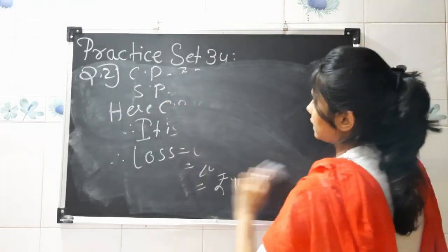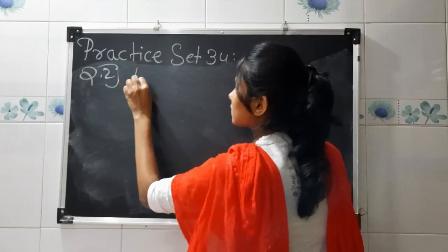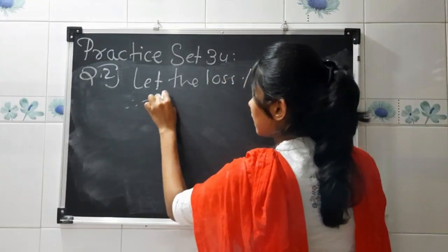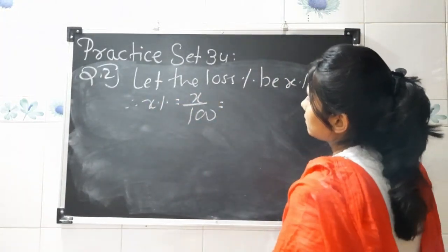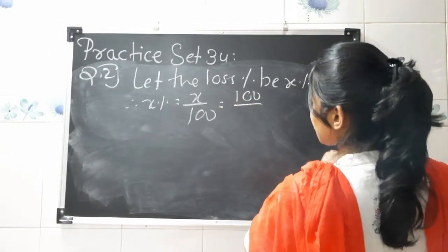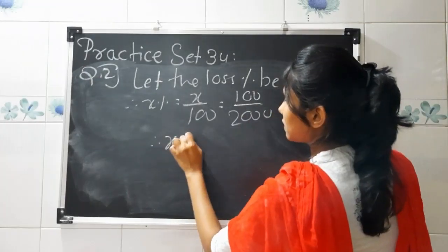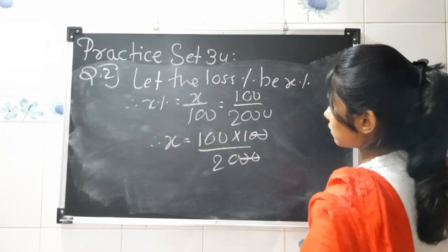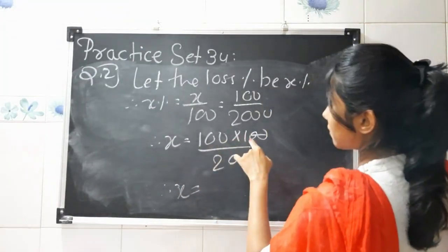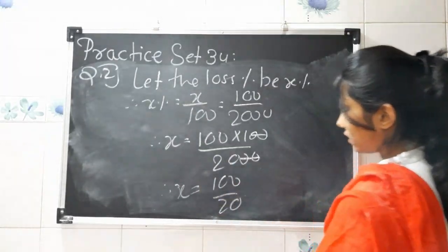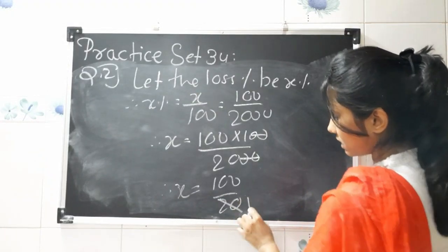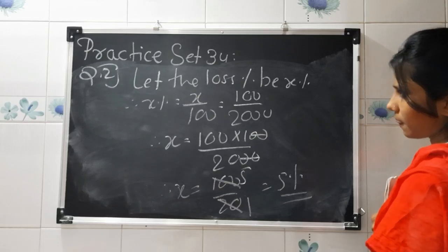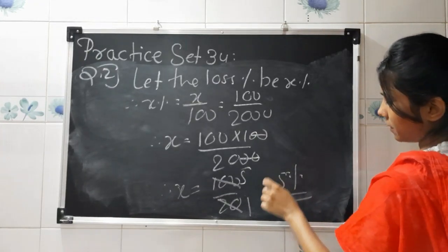Now for the loss percentage: let the loss percent be X percent. Therefore, X upon 100 equals loss divided by cost price, that is 100 upon 2000. By cross multiplication, X equals 100 multiplied by 100 upon 2000, which simplifies to 5. So the loss percentage incurred is 5% and the loss is rupees 100.